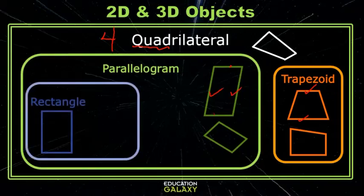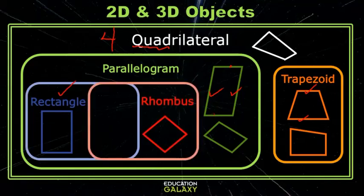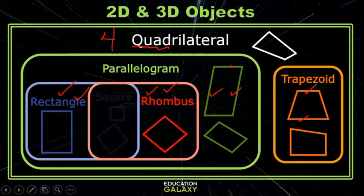Parallelograms with four right angles are called rectangles, and parallelograms with four congruent sides are called rhombuses. If a parallelogram has four right angles and four equal sides, it is called a square.